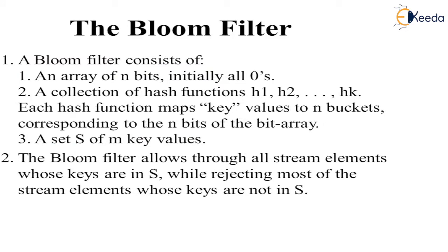The Bloom filter is a very important data structure. A Bloom filter consists of an array of n bits, initially all set to zero. A collection of k hash functions h1, h2, ..., hk each maps key values to n buckets corresponding to the n bits of the array. Given a set S of m key values, the Bloom filter allows through all stream elements whose keys are in S while rejecting most elements whose keys are not in S.